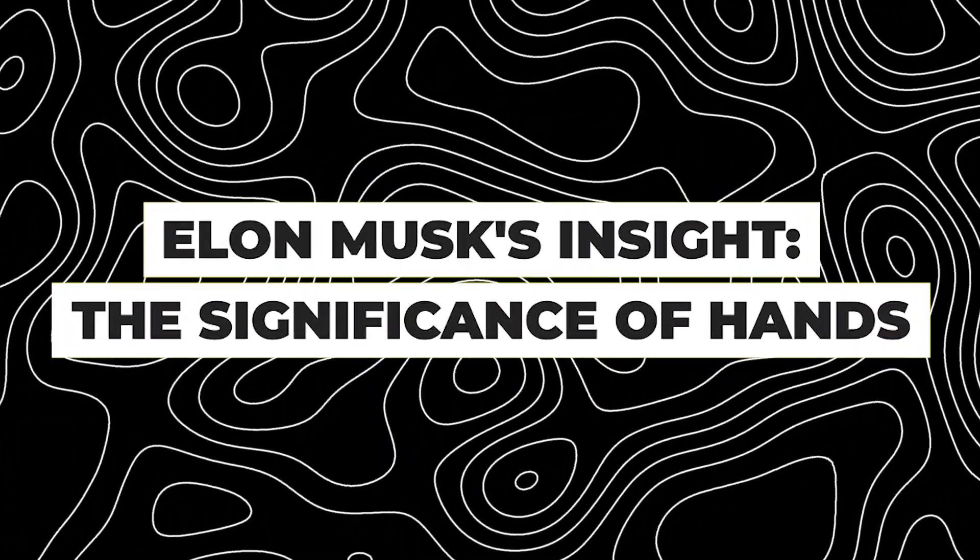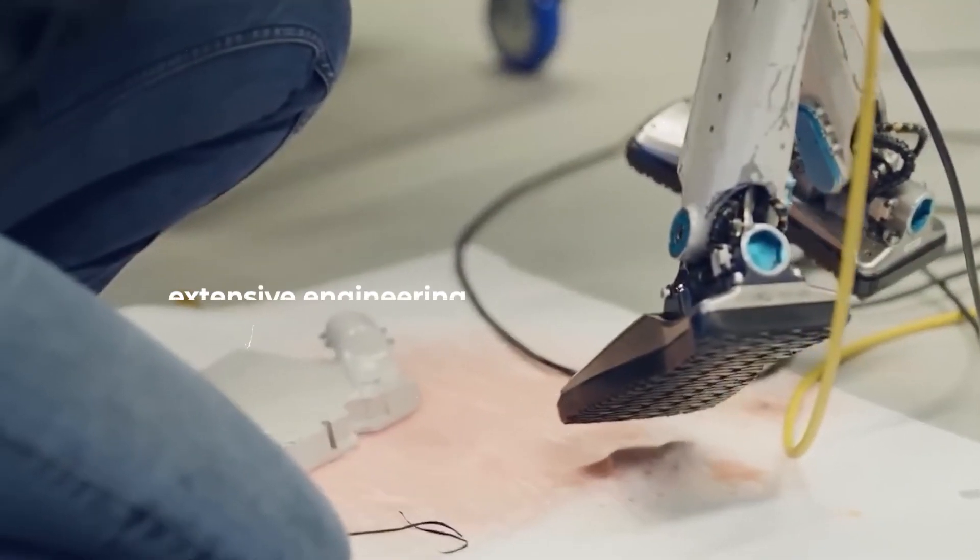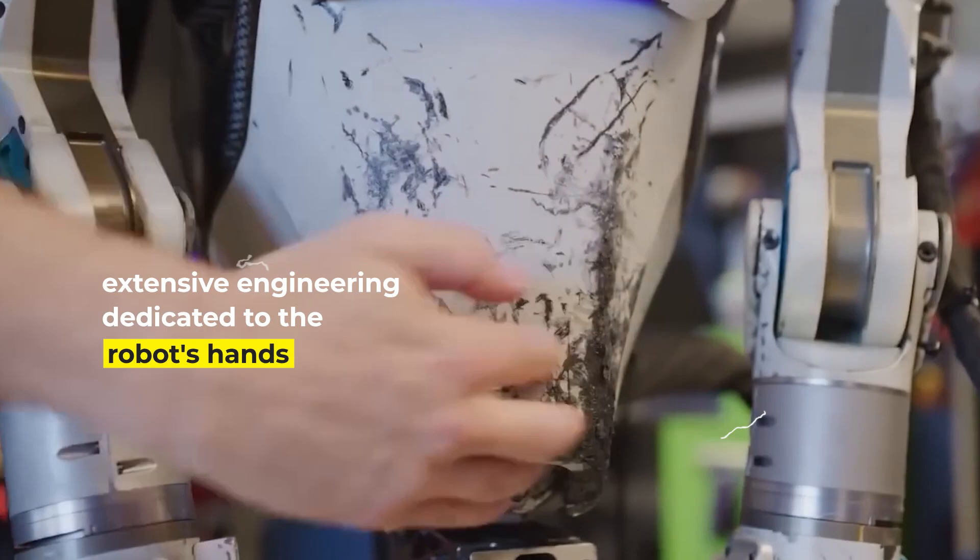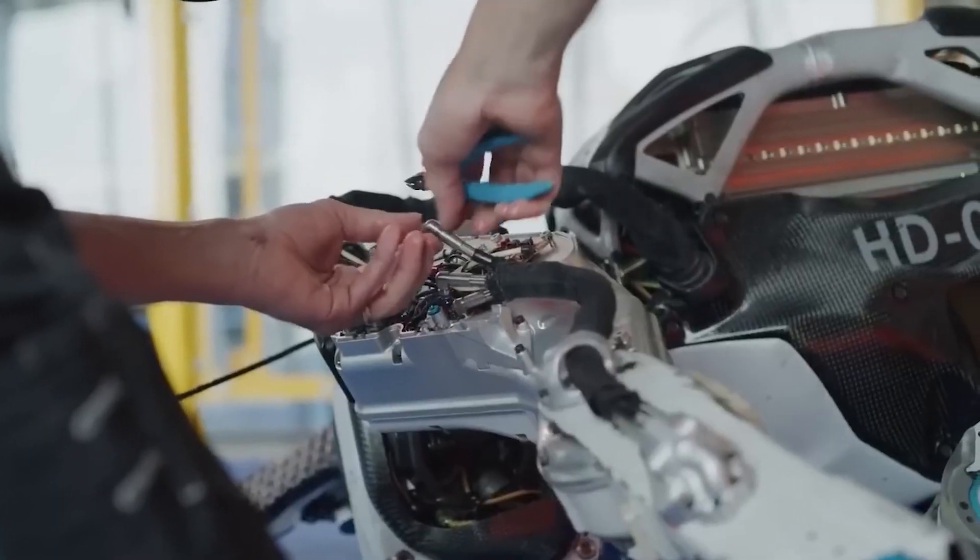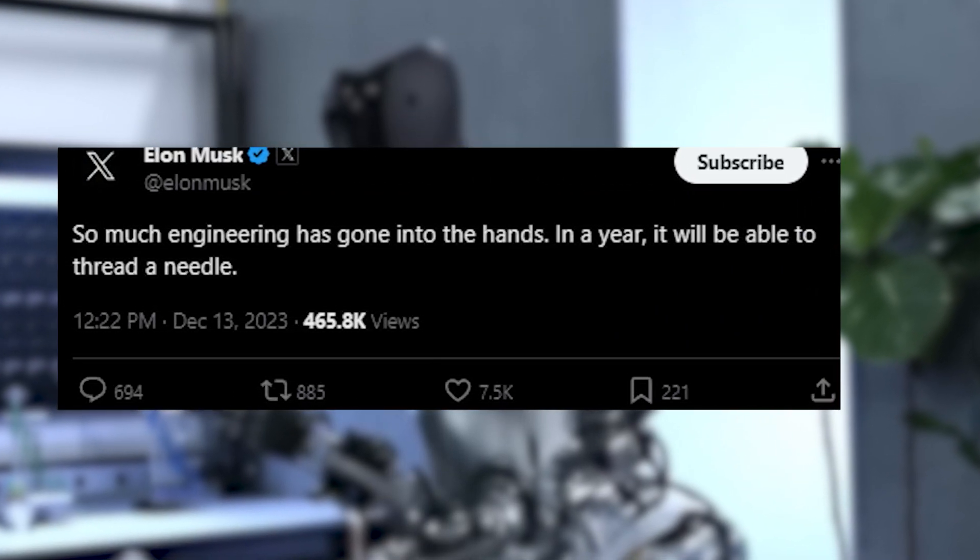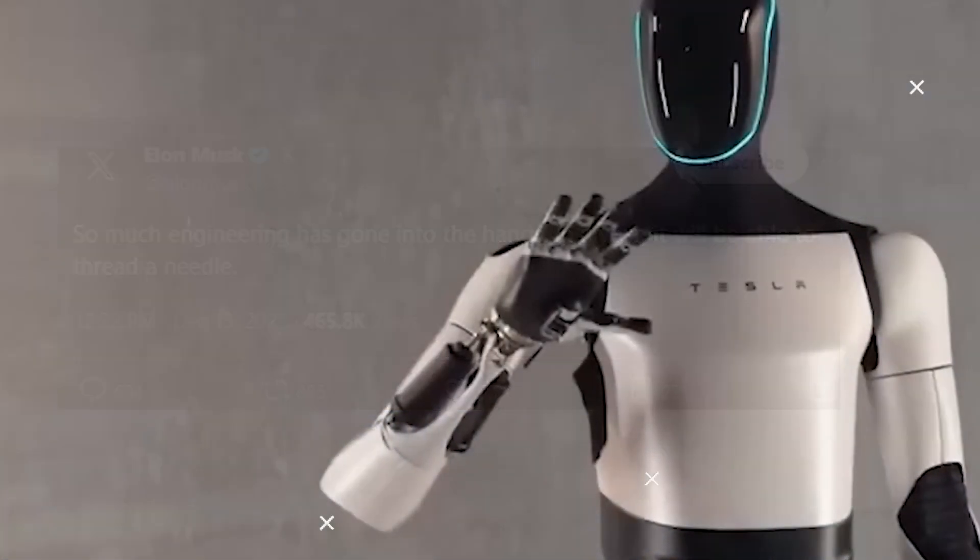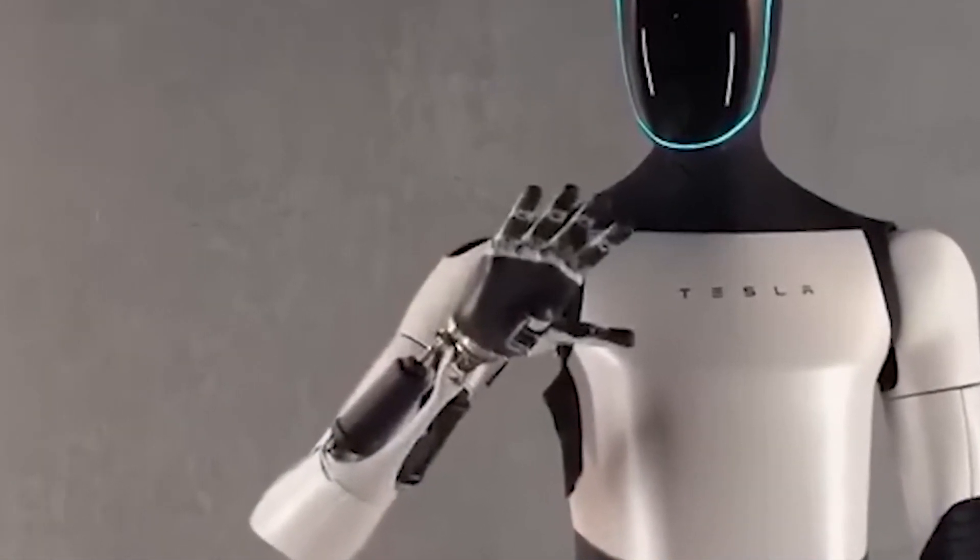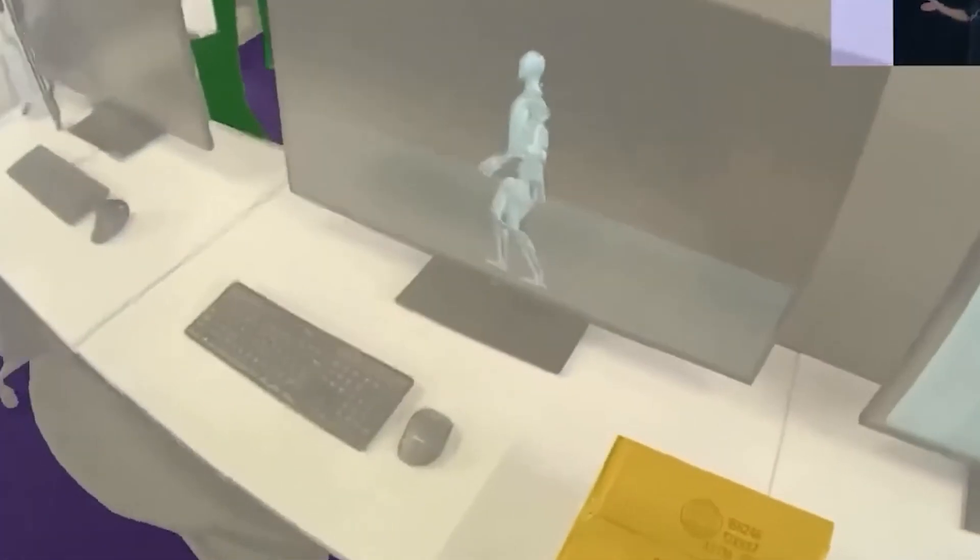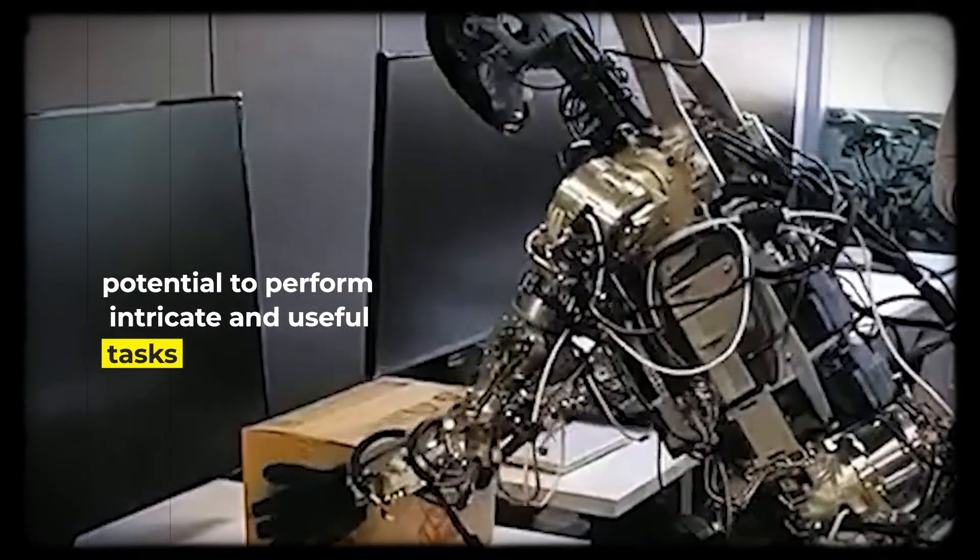Elon Musk, in response to the Optimus video on Twitter, emphasized the extensive engineering dedicated to the robot's hands. He even predicted that in a year, the robot would be capable of threading a needle. This highlights the critical role hands play in Optimus Robot's functionality and its potential to perform intricate and useful tasks, positioning it as a valuable asset to assist humans.